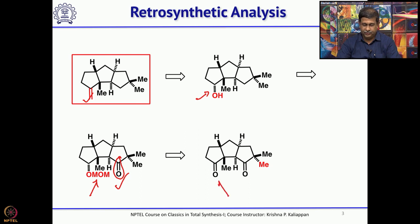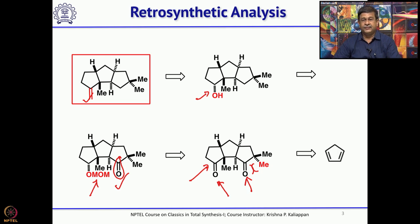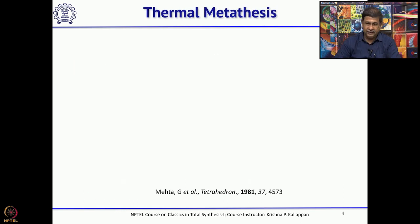There are two carbonyl groups, and one is at a highly sterically hindered position, so one can easily manipulate the other ketone. That is what you have seen in this retrosynthetic disconnection, and this can be obtained from cyclopentadiene. I will come to how he has done this.